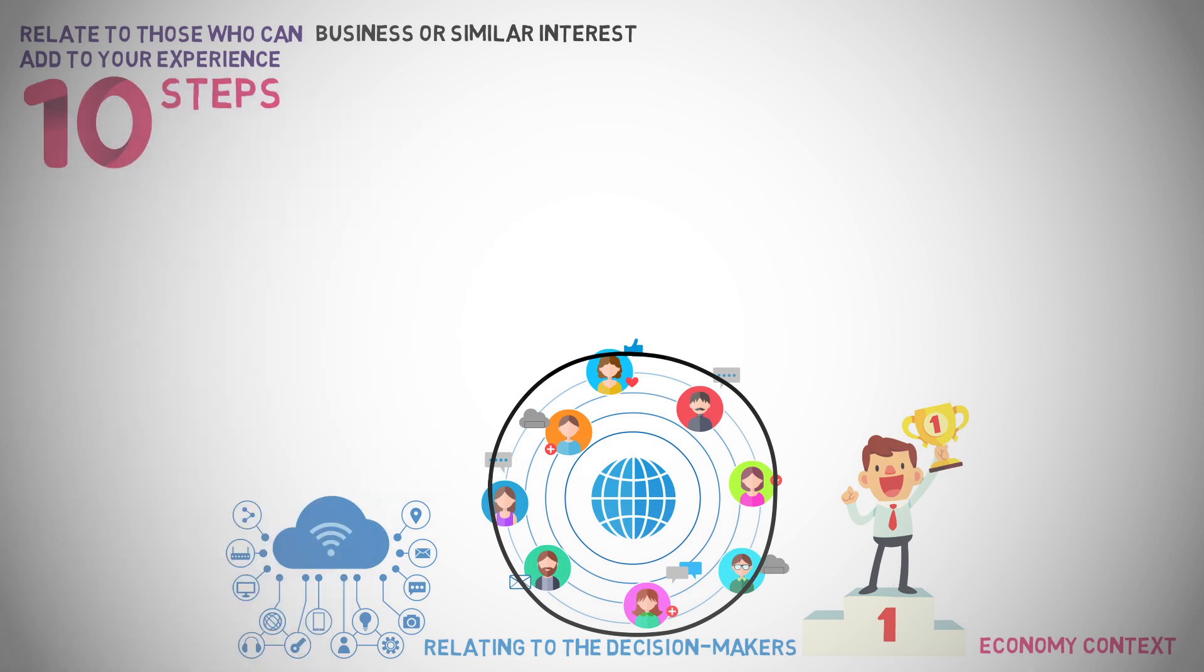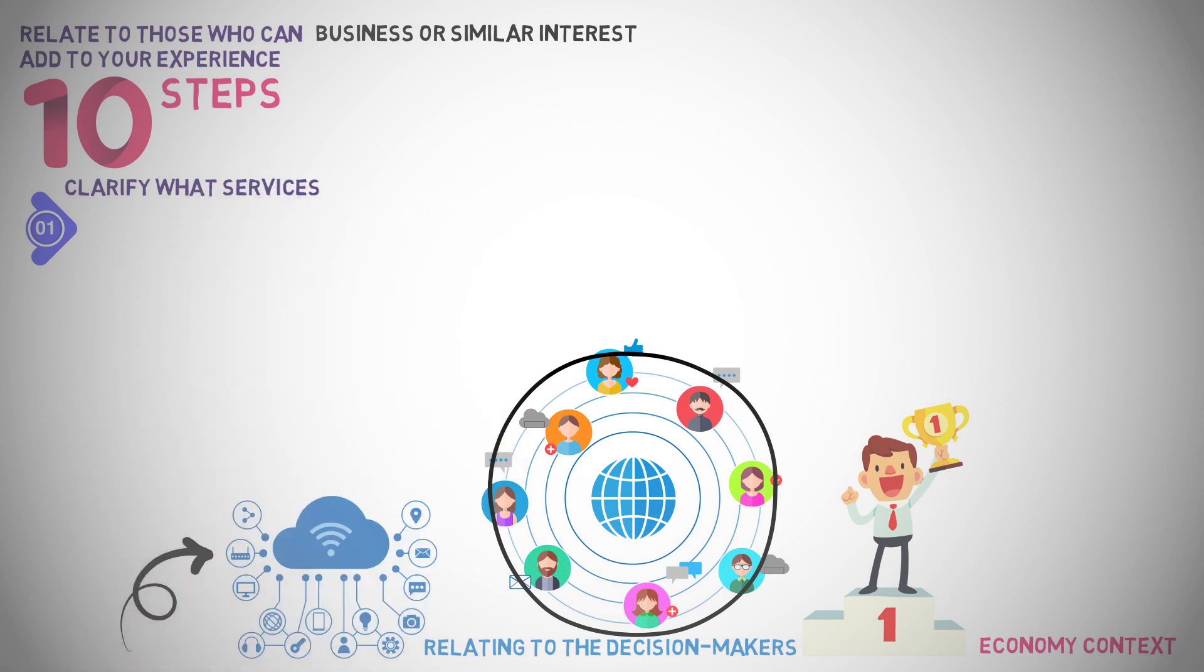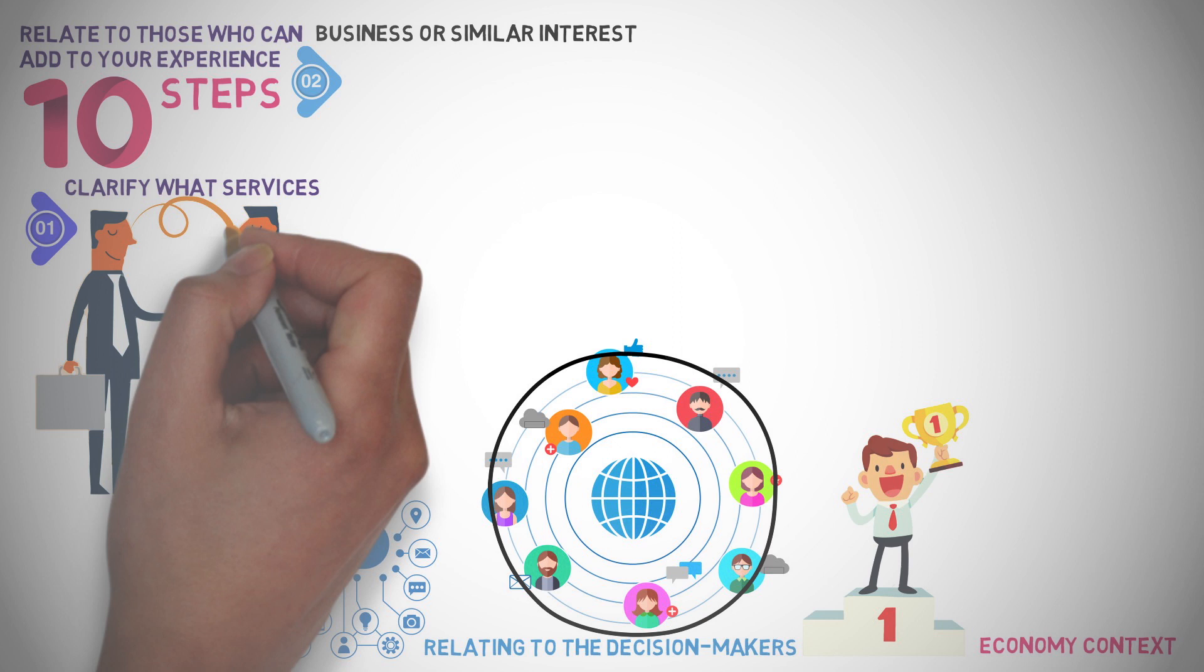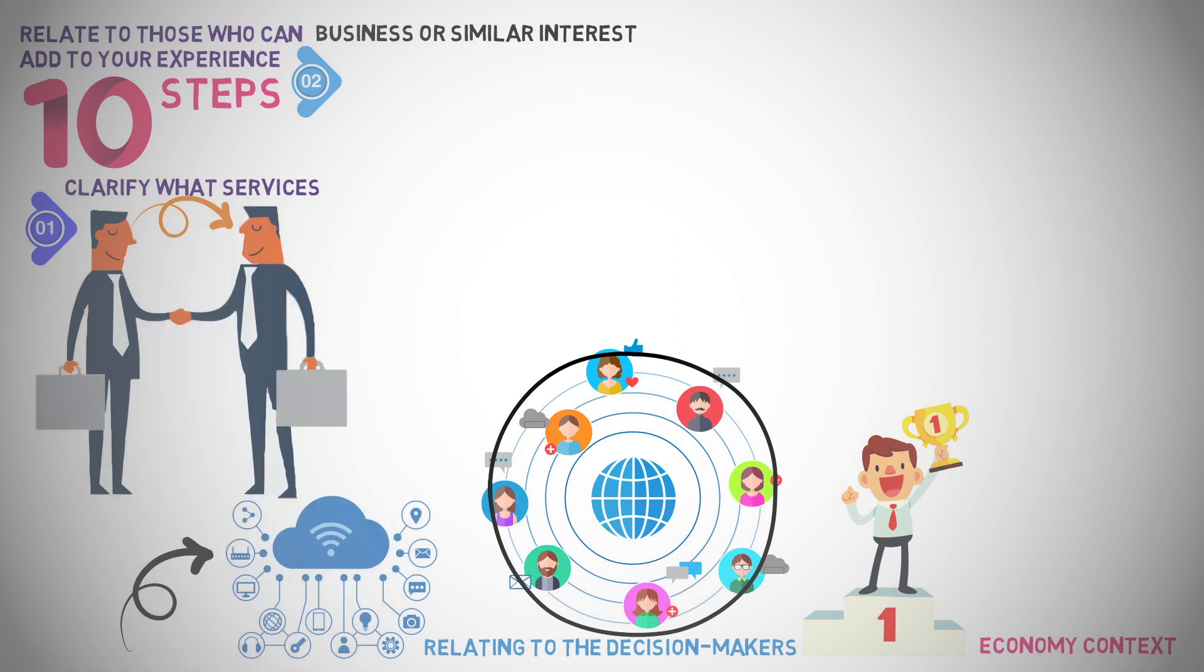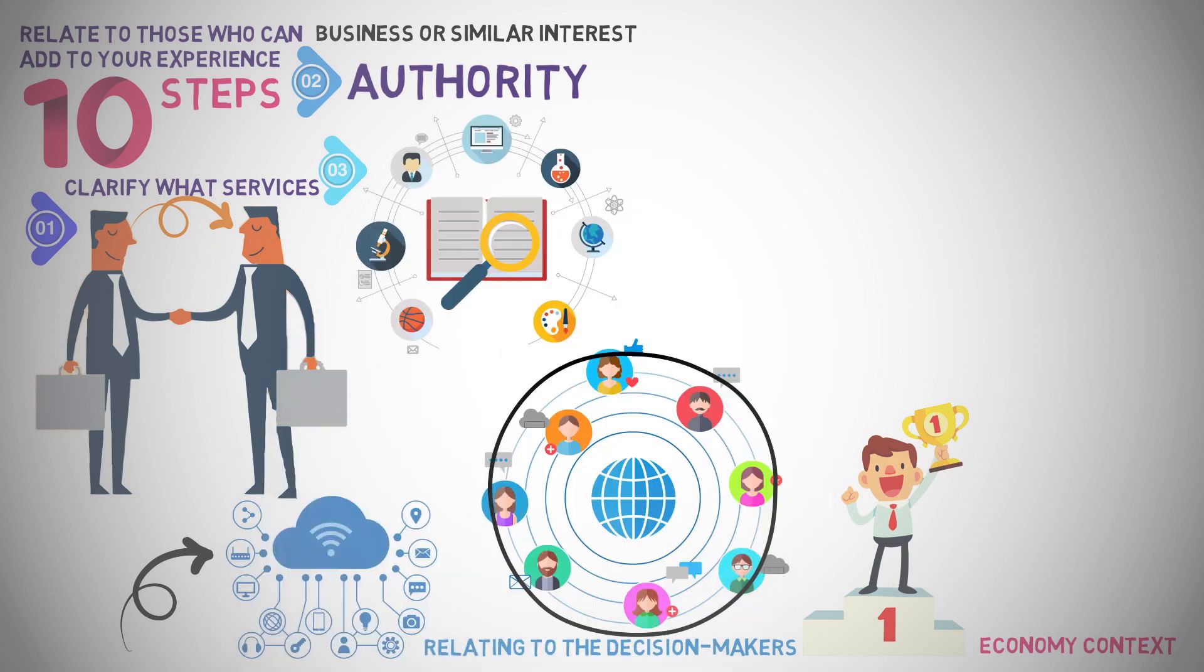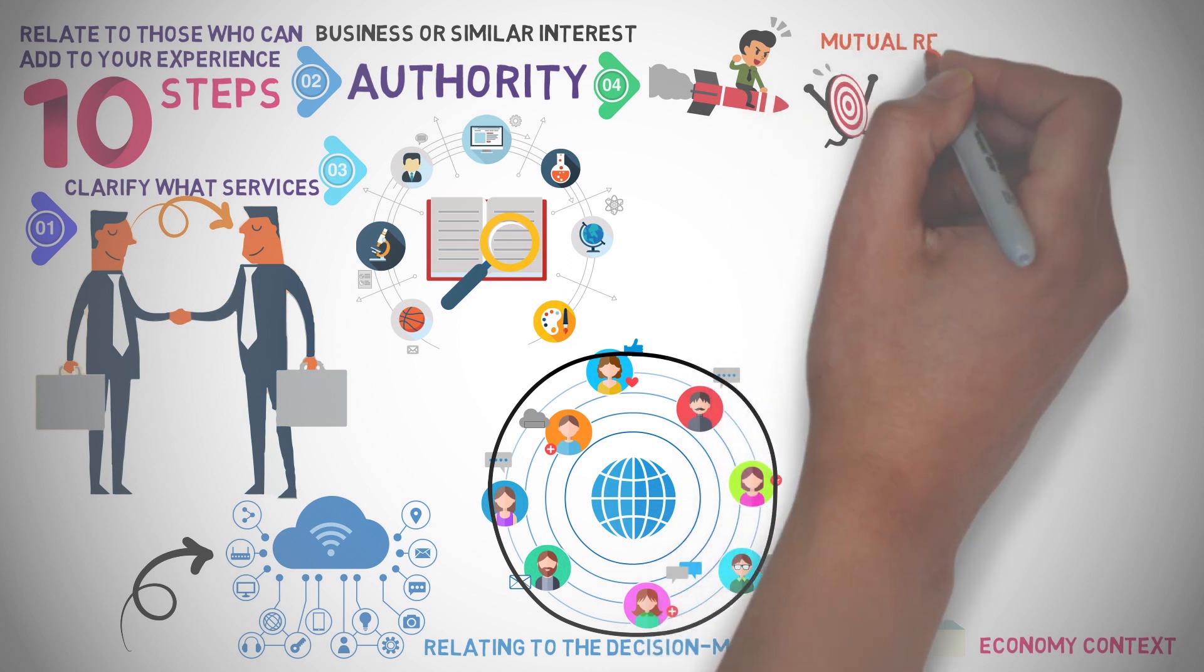Here are the 10 steps suggested to help you relate to the right people in a right manner through networking. 1. Clarify what services you can offer in the relationship. 2. Ensure that you are connecting with the right person having the authority. 3. Make some research before you relate to the people. 4. Aim at developing a mutual relation with them. 5. Make your communication engaging and useful.